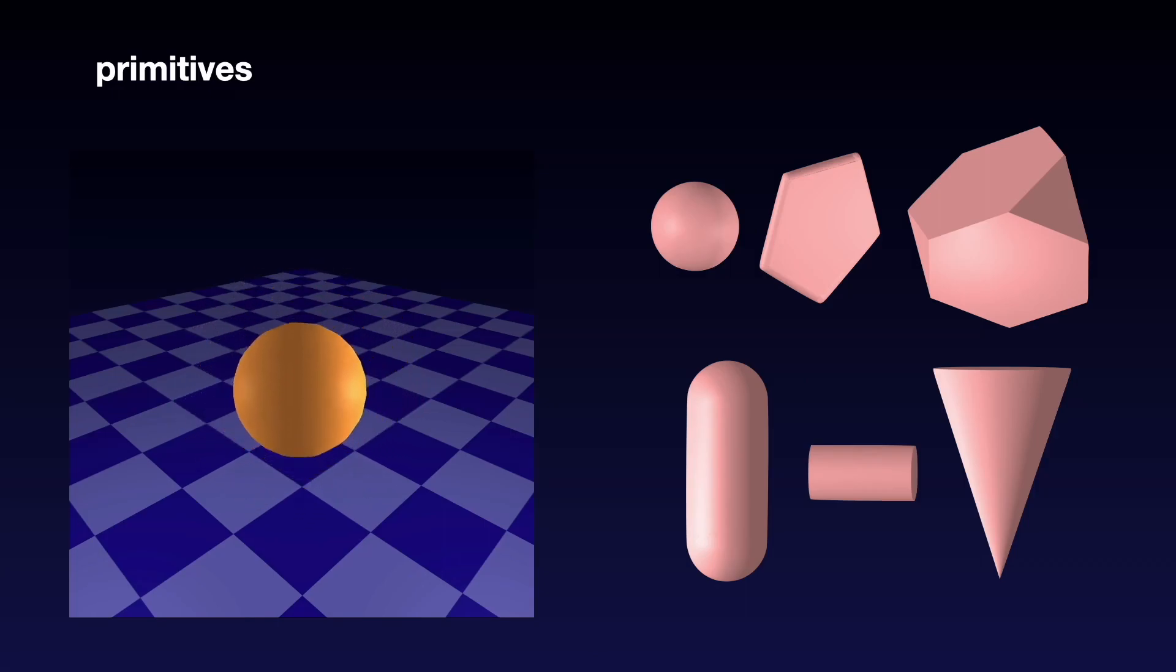DCOL is capable of handling the following six primitives: ellipsoids, padded polygons, polytopes, capsules, cylinders, and cones. These primitives can be composed to construct more complex, non-convex geometries as well.